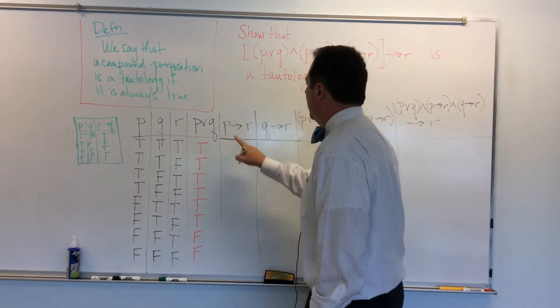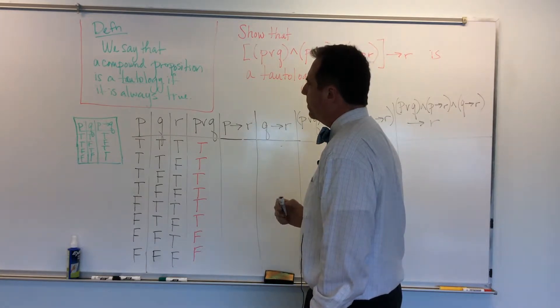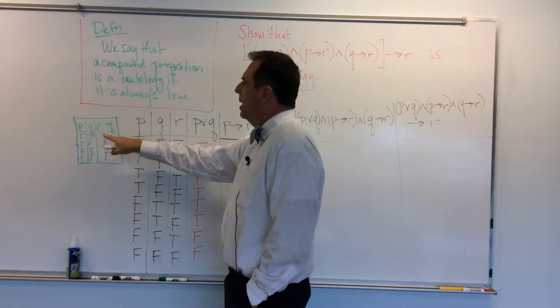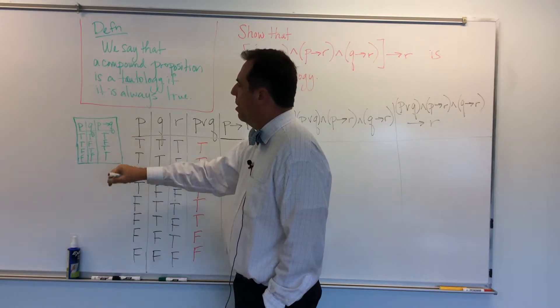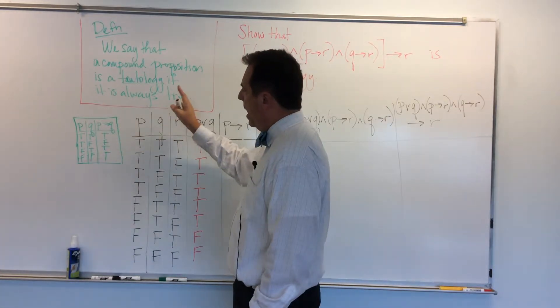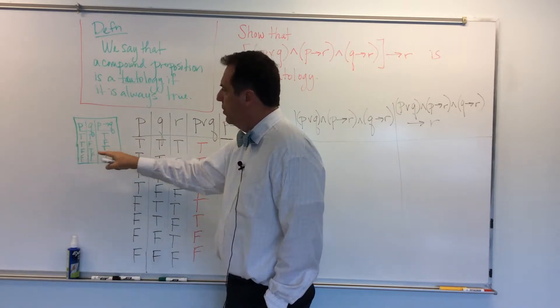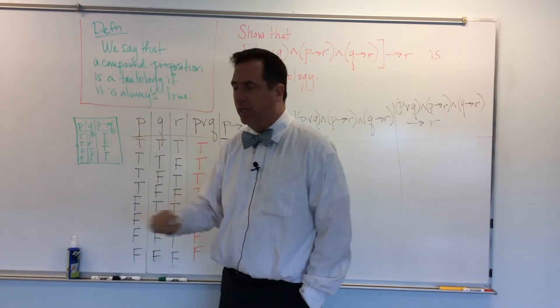Alright. Now I have a conditional, if P, then Q. I have a little cheat sheet over here that shows me the only time I have a false result in a conditional